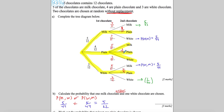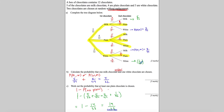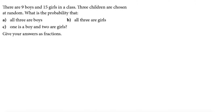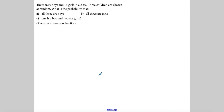Now for a three-event question — less common in past papers but good to practice. There are 9 boys and 15 girls in a class, and three children are chosen at random without replacement. We'll build a tree diagram. Since we're picking three children, there's no replacement.